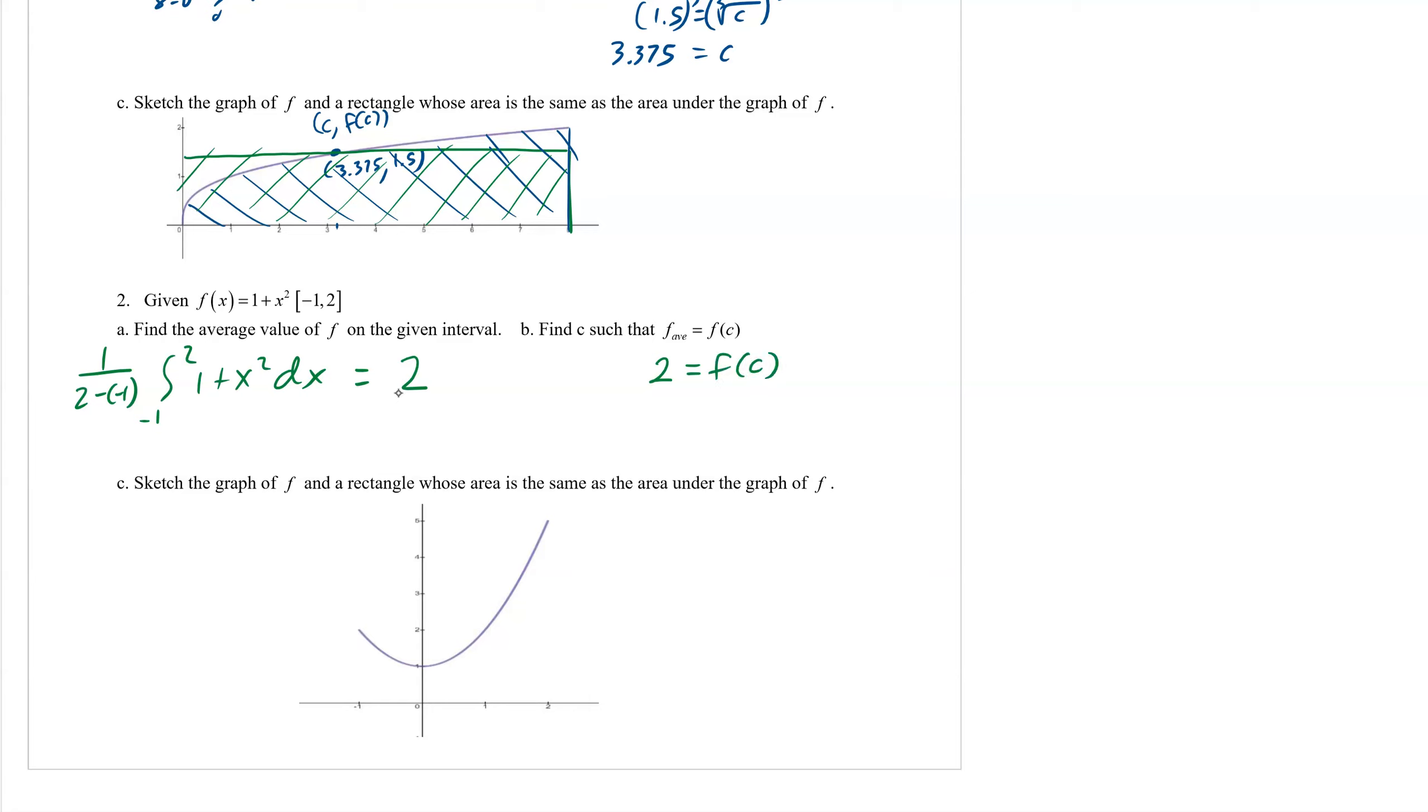Now, if I plug in c into my function, I will be able to find 2. Let's subtract 1. Square root of 1 plus or minus. We would end up with c equals plus or minus 1. We actually have 2 c values here.